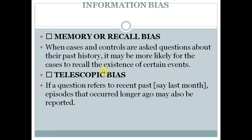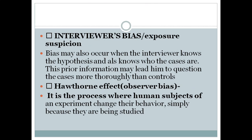Another type of information bias is telescopic bias — a psychological phenomenon. When people are asked about recent incidents, they may report events that occurred very long ago as recent, and recent events as very old. This telescopic effect can be seen up to three years, where there is a shift in reported timing of events.